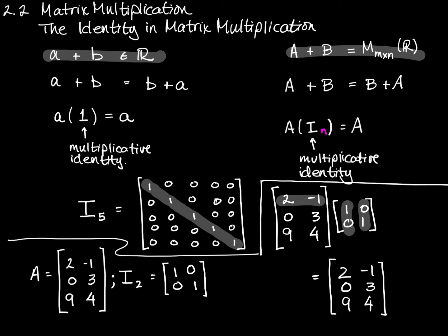This multiplication was matrix A times I sub two. I'd like to show what happens if I multiply I sub two on the left with matrix A, but I can't, because I sub two is a two-by-two matrix and matrix A is a three-by-two matrix — those dimensions don't match. So I can't do that multiplication. What I can do is change this to I sub three and do matrix multiplication I sub three times A. I don't have room to do that on this screen, so I'll move to another slide.